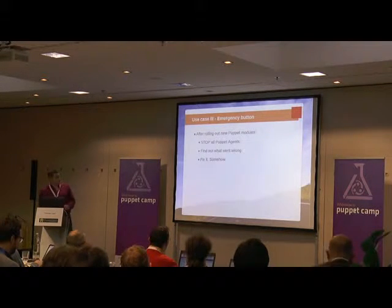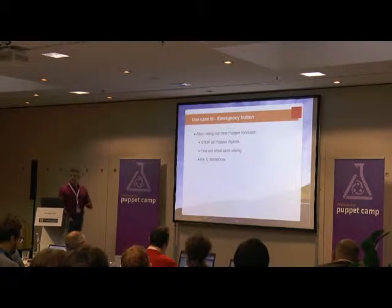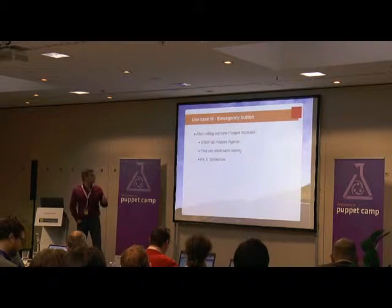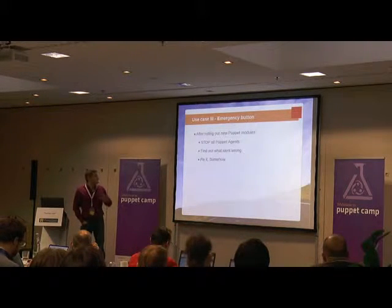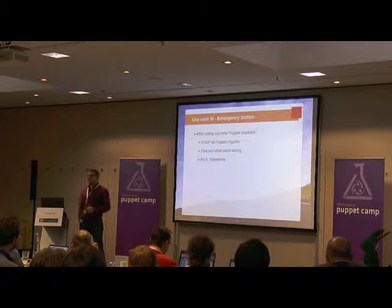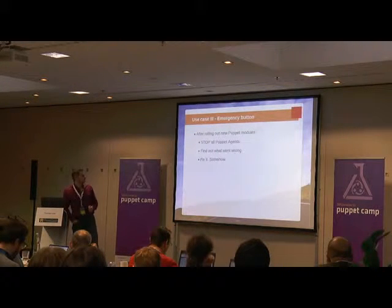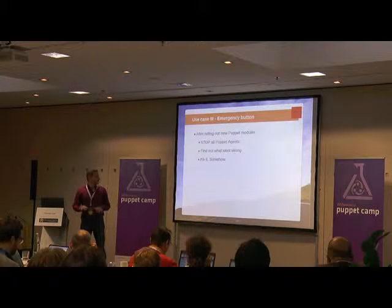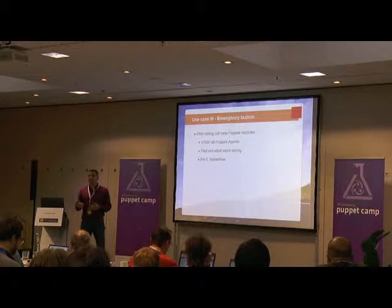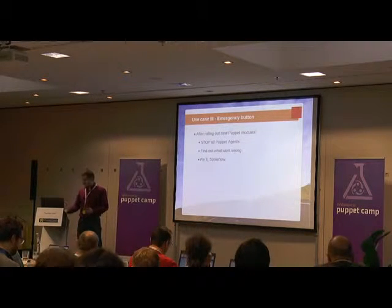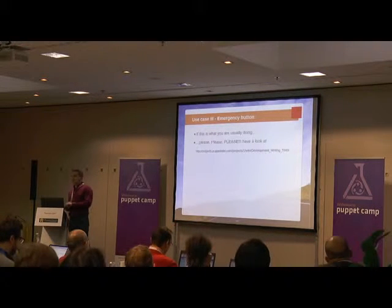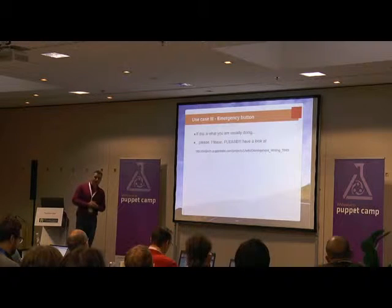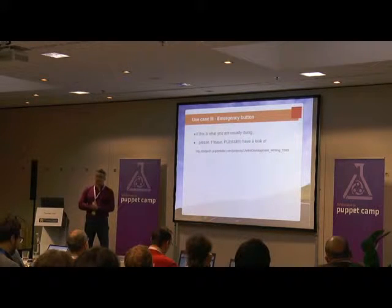That leads me to the next use case: the emergency button. This is great — this is what our operations guys are doing, sometimes, rarely. You roll out a new Puppet module, something goes wrong, you immediately stop the Puppet agents and find out what went wrong. You have no time to write new modules, so you use mCollective to fix it live. But if this is what you are always doing after rolling out modules, then something is going wrong.